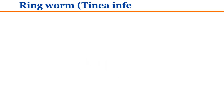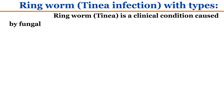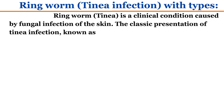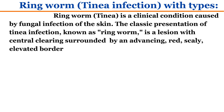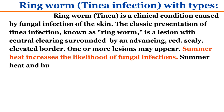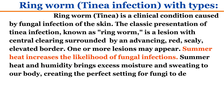Ringworm or tinea infection with types. Ringworm or tinea is a clinical condition caused by fungal infection of the skin. The classic presentation of tinea infection, known as ringworm, is a lesion with central clearing surrounded by an advancing, red, scaly, elevated border. One or more lesions may appear. Summer heat increases the likelihood of fungal infections, as heat and humidity bring excess moisture and sweating to our body, creating the perfect setting for fungi to develop infections.